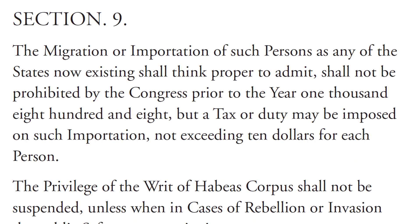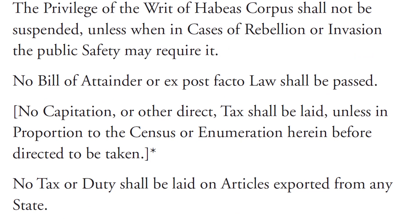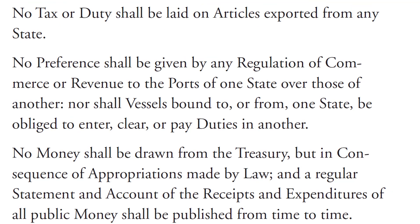Section 9. The migration or importation of such persons as any of the states now existing shall think proper to admit shall not be prohibited by the Congress prior to the year 1808, but a tax or duty may be imposed on such importation not exceeding $10 for each person. The privilege of the writ of habeas corpus shall not be suspended unless when in cases of rebellion or invasion the public safety may require it. No bill of attainder or ex post facto law shall be passed. No capitation or other direct tax shall be laid unless in proportion to the census or enumeration herein before directed to be taken. No tax or duty shall be laid on articles exported from any state. No preference shall be given by any regulation of commerce or revenue to the ports of one state over those of another, nor shall vessels bound to or from one state be obliged to enter, clear, or pay duties in another.